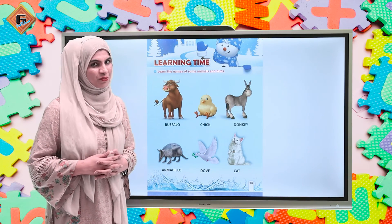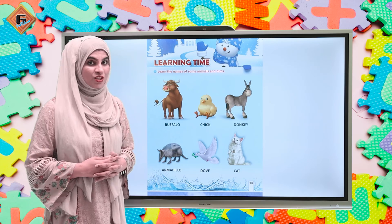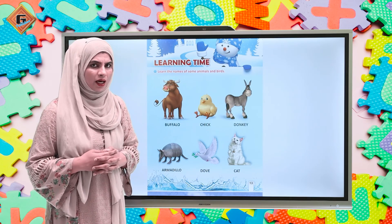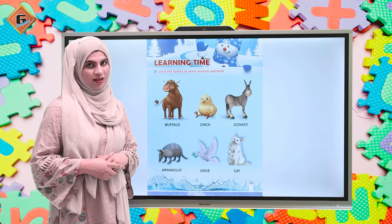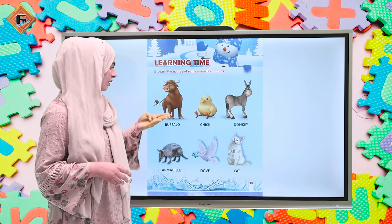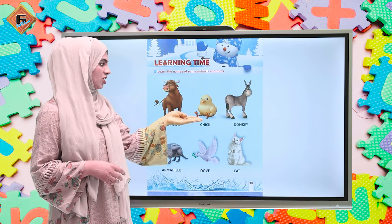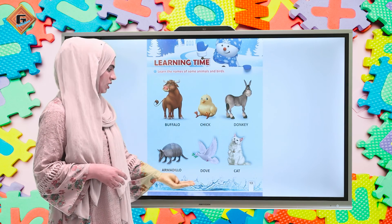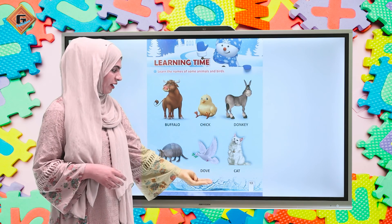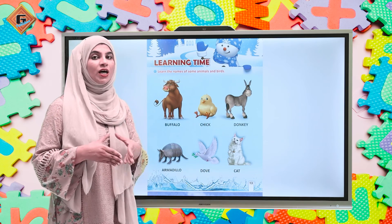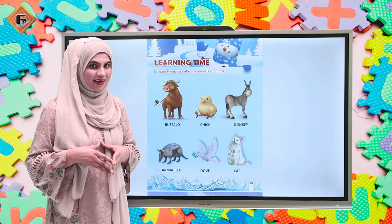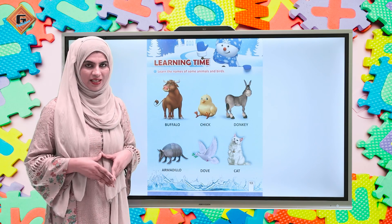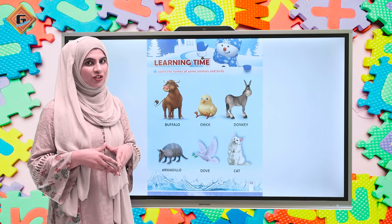Ok students, to humne page number 13 per kuch birds or animals ke names sikhe hai. Ab aap kya karei? Eek baar mere saath phir se revise kar lein: buffalo, chick, donkey, armadillo, dove and cat. Ab is video ke baad kya karei ngi? Kisi ki help ke saath isko phir se revise karein. Thank you so much for watching the video. Allah hafiz.